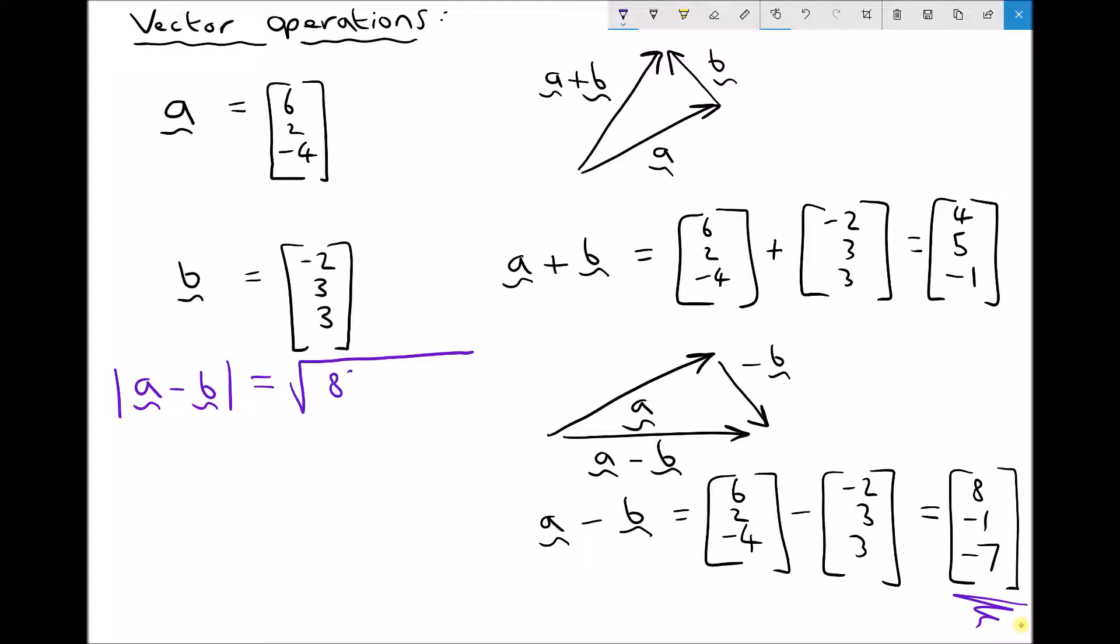So we would have 8 squared plus minus 1 squared plus minus 7 squared. And that gives us the square root of 64. Minus 1 times minus 1 is just plus 1. And minus 7 times minus 7 is plus 49.